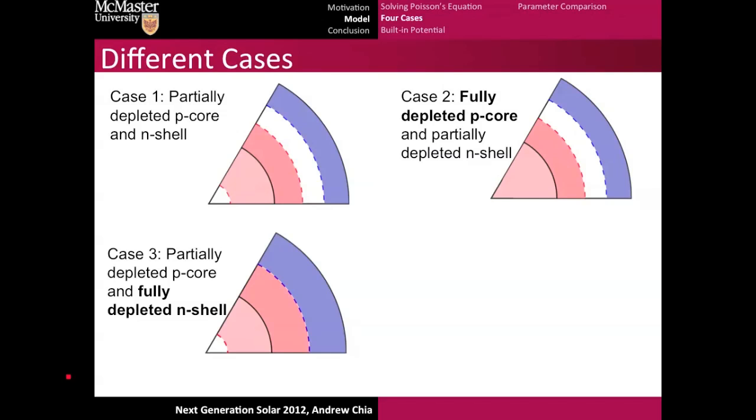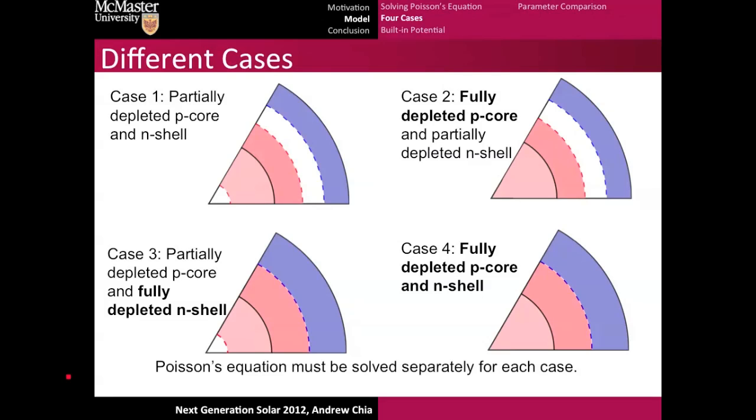Really, in each case, you'd have to solve Poisson's equation separately to get the full idea. We'll see later on that each case will affect the built-in potential, which has big implications on the performance of our solar cell.